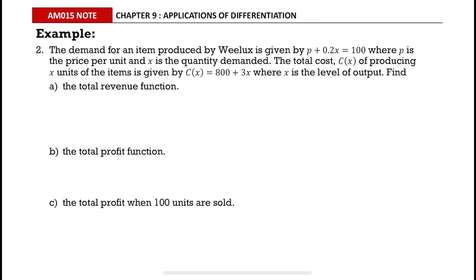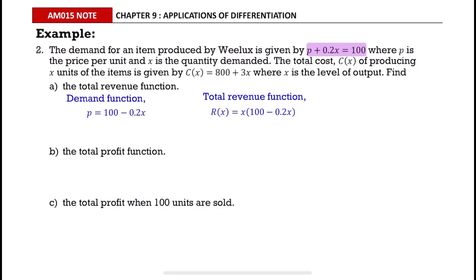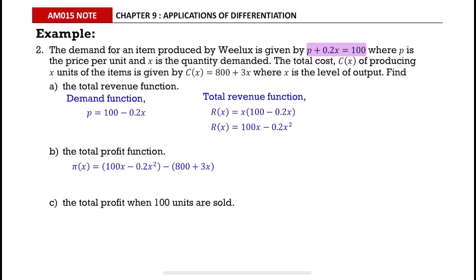To find the total revenue function, we must have the demand function first. From the given demand function, express p as the subject. Then find the total revenue function using the formula R(x) = x · p(x). The total profit function is the revenue function minus the cost function.